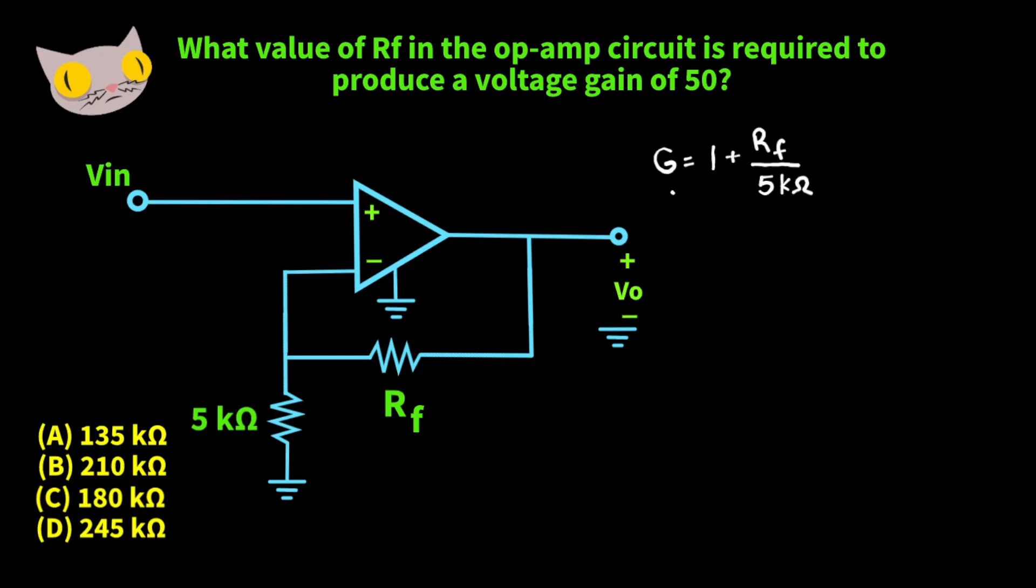So the formula for gain for this op amp circuit is going to be 1 plus RF over this 5k ohm resistor. Let's go ahead and subtract 1 from both sides. So now we have G minus 1 is equal to RF over 5k ohms.